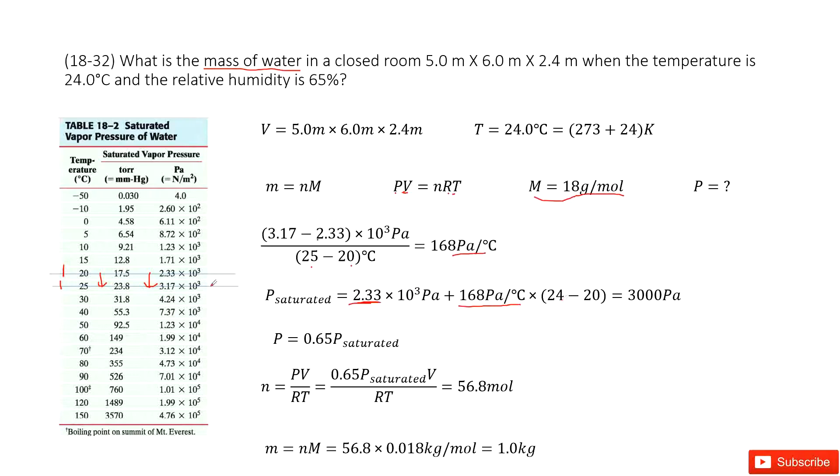Because now it's 24, initially it's 20. So now we can get the pressure is 3000 Pa for the pressure at the saturated vapor.